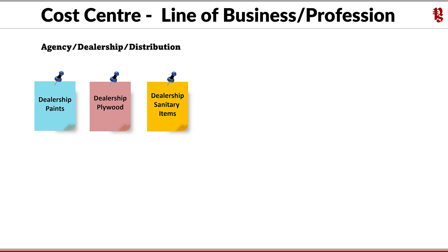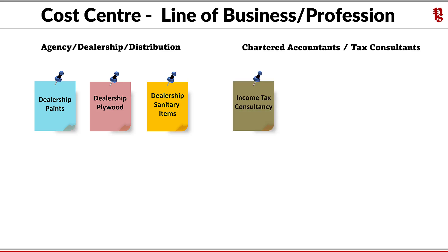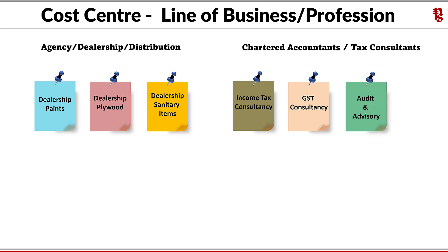The next example — let us take a case of a professional firm such as chartered accountants or tax consultants. These professionals render services to their clients on various domains. If they want to track the revenues of each domain, their cost centers could look something like this: income tax consultancy, GST consultancy, audit and advisory services, and conveyance.